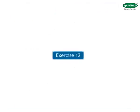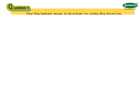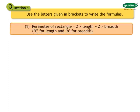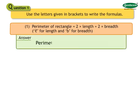Let us solve exercise 12. Question number 1: Use the letters given in brackets to write the formulas. Number 1: Perimeter of a rectangle equals to 2 into length plus 2 into breadth. Use L for length and B for breadth. Answer: Perimeter of a rectangle equals to 2 into L plus 2 into B.